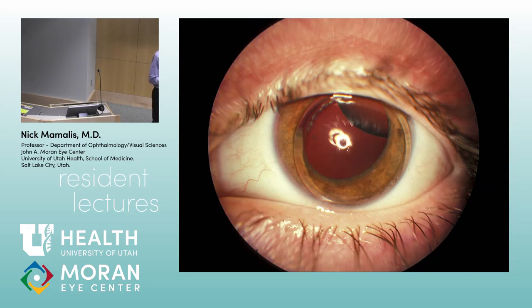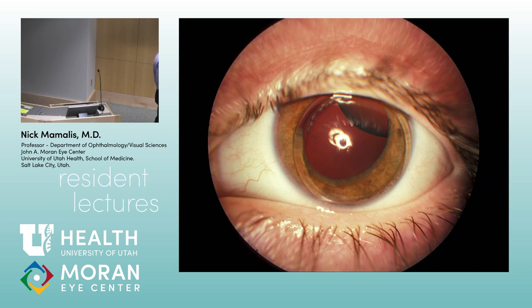Allie, what do we see here? It looks like the edge of the lens — it's luxated superiorly, and the person is wearing an aphakic contact lens. It's luxated superior temporal. What entity gives you superior temporal luxation of the lens? Marfan's. This is a Marfan's patient. Marfan's lenses go up and out. It doesn't make sense because it's a diffuse zonulopathy — you'd think the lens would sink down — but it doesn't in Marfan's. I haven't been able to find a good explanation for that yet.